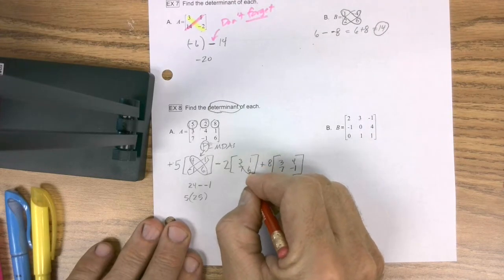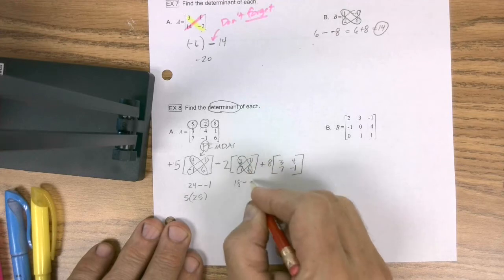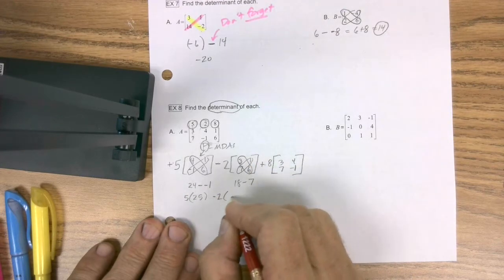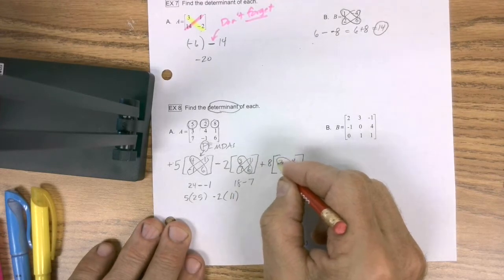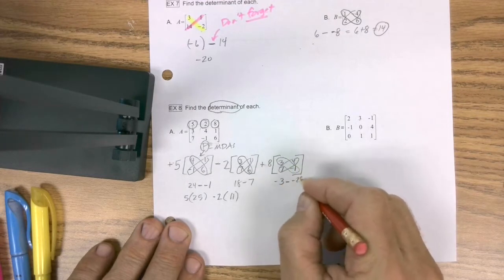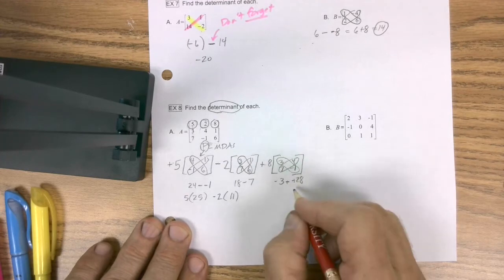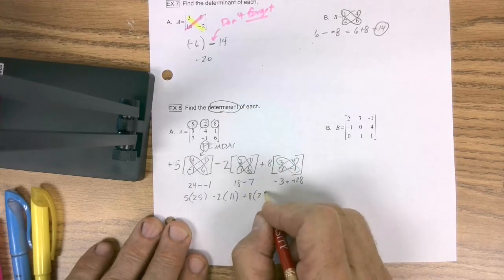So that's 25 times 5. How about this one? Well, this is 18 minus 7. So I get minus 2 times 11. And this guy, 3 times negative 1 is negative 3, minus negative 28. So that's the same thing as negative 3 plus 28. So that would be plus 8 times 25.